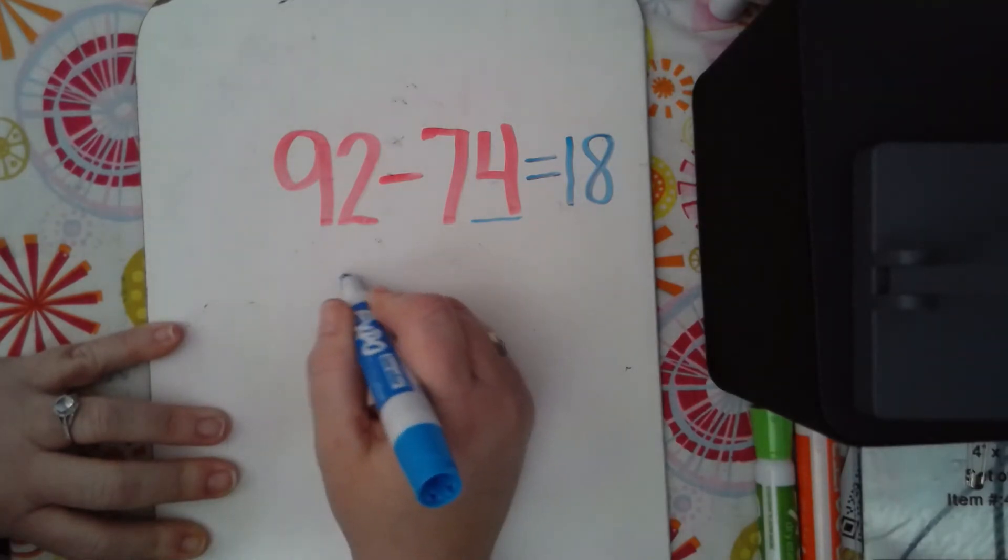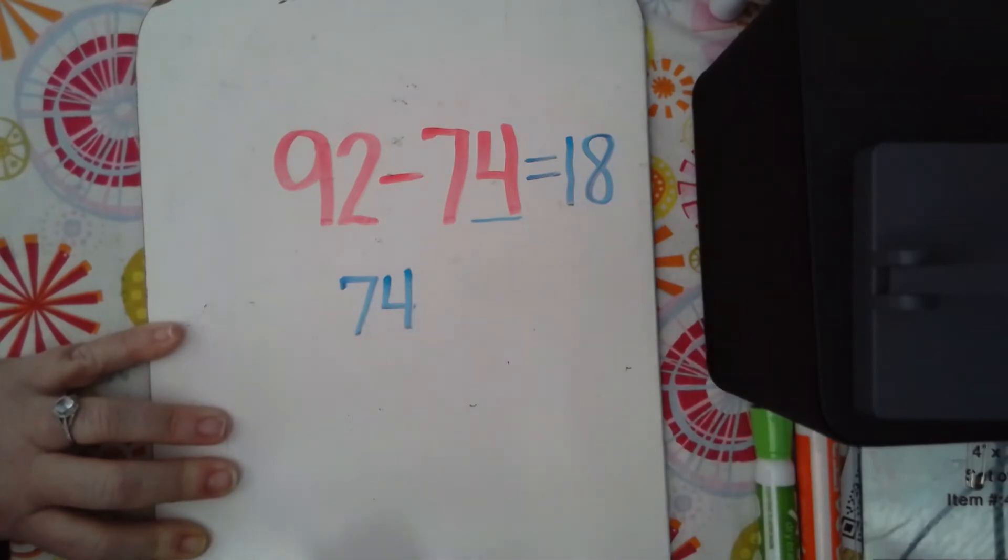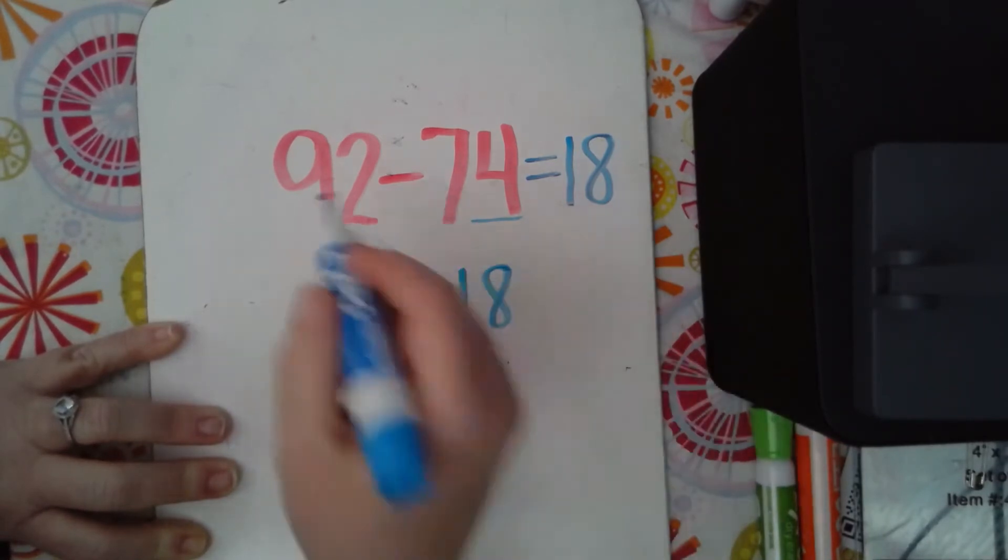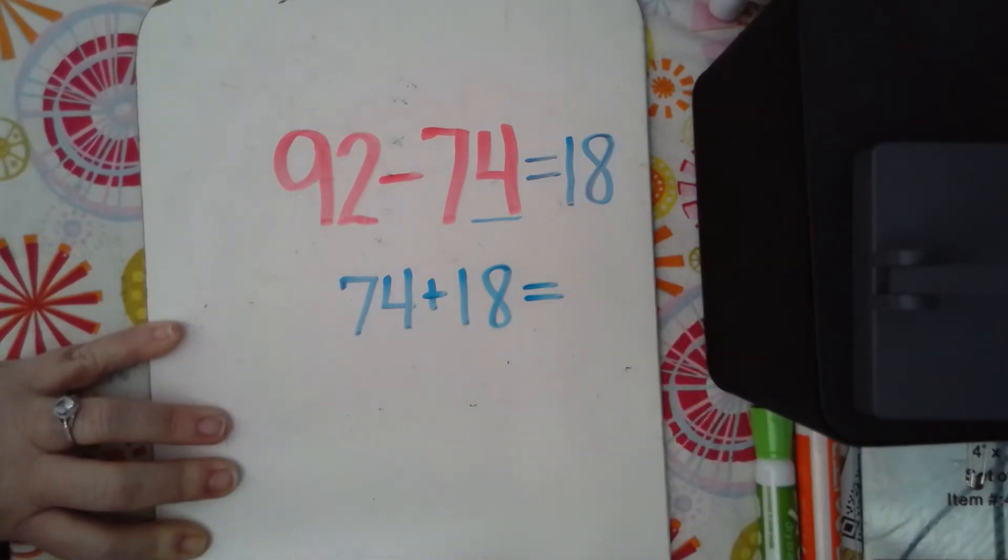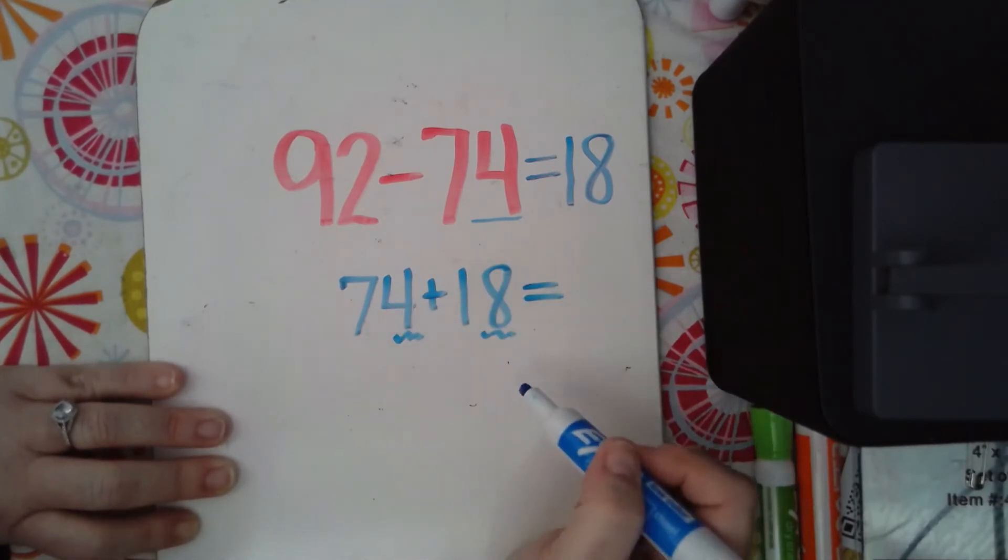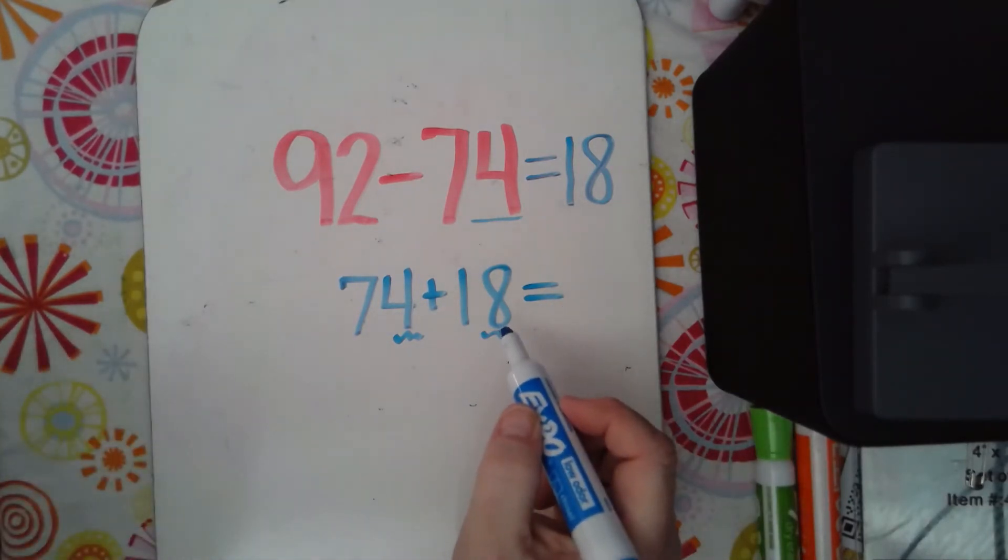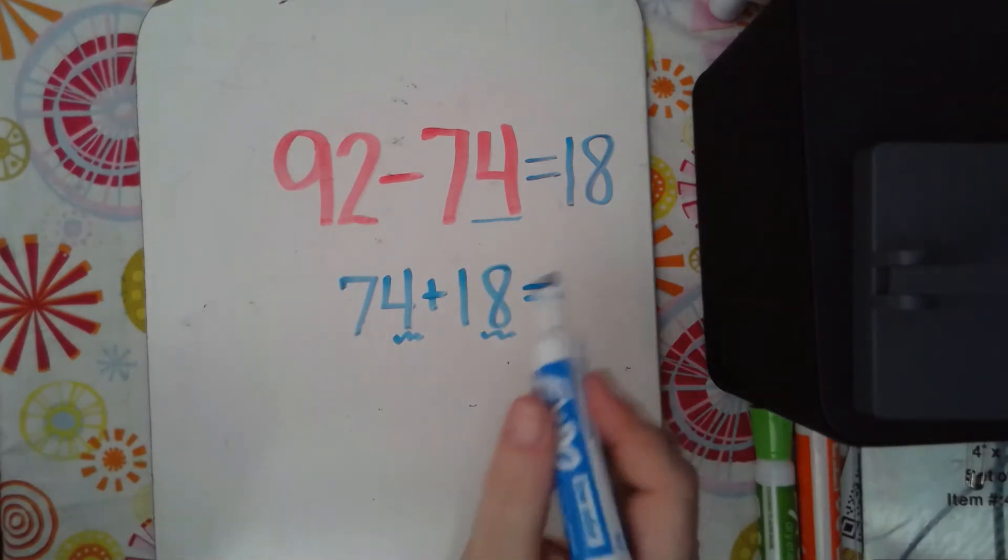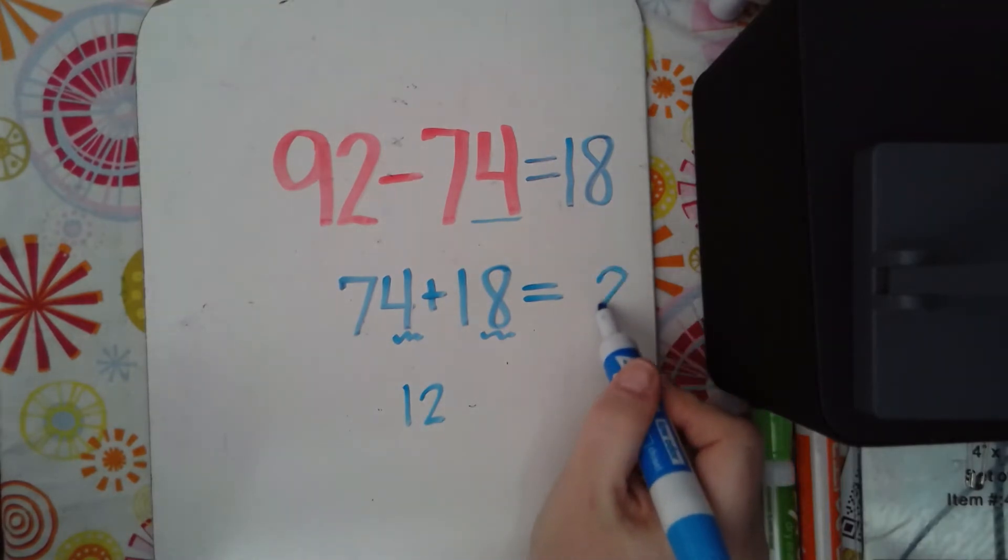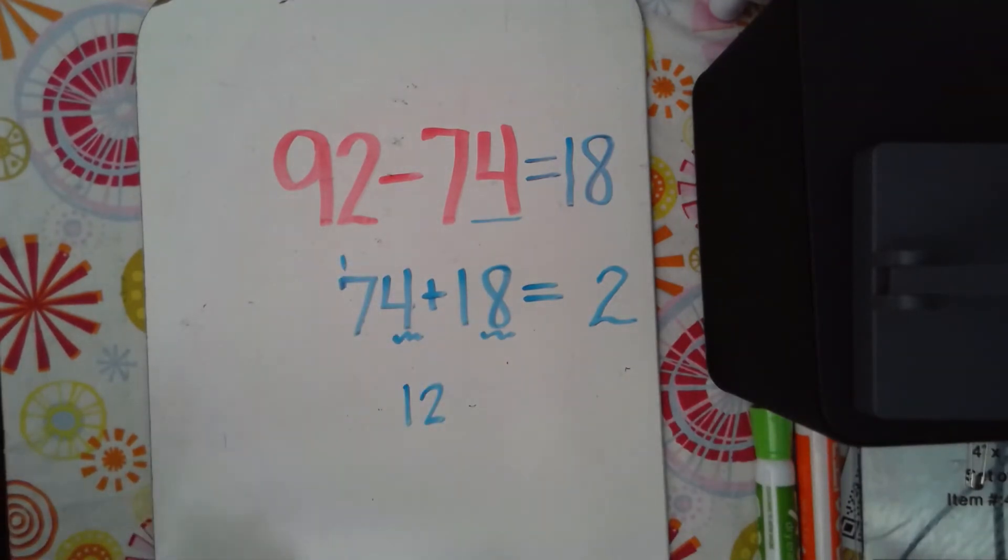So if I add, and remember we've looked a lot at fact families, so I should be able to add 74 plus 18 and get 92. Alright, so I'm going to look at my ones place first. I have 8 ones and 4 ones. If I add 8 plus 4, I get 12, but I can't put a 10 in the ones place. So 12, if I look at it, it has a 10 and 2 ones. So I'm going to put my 2 ones here.